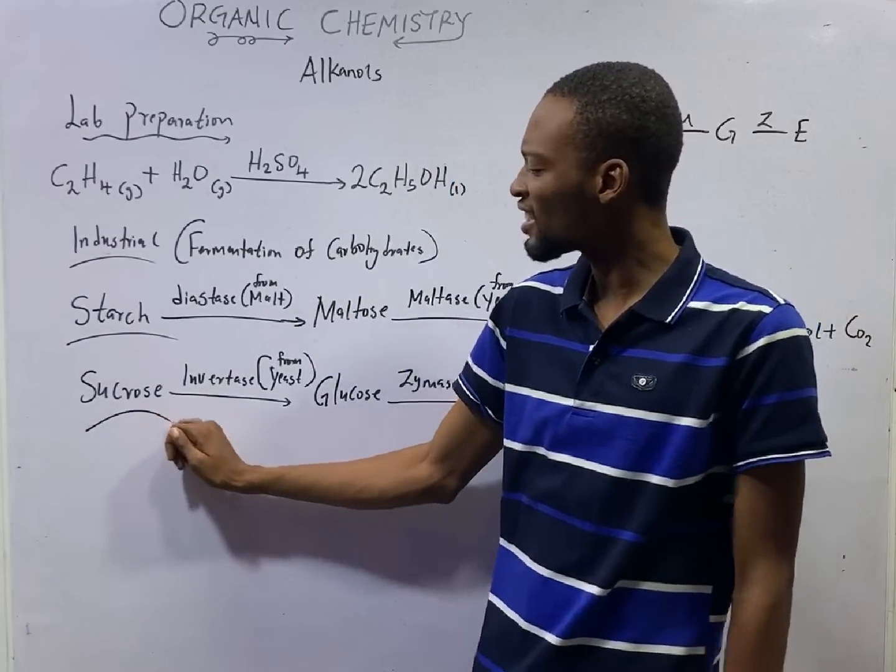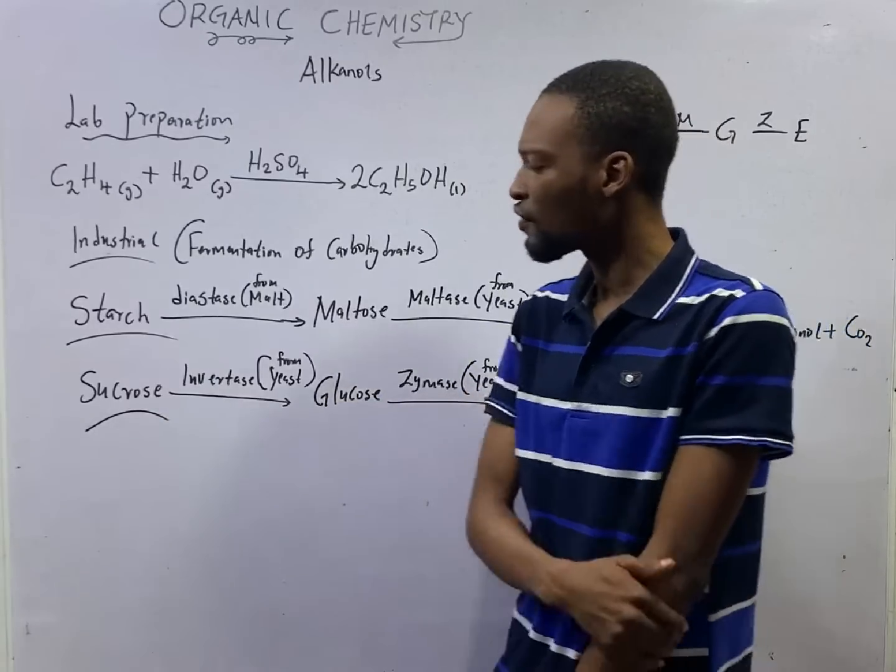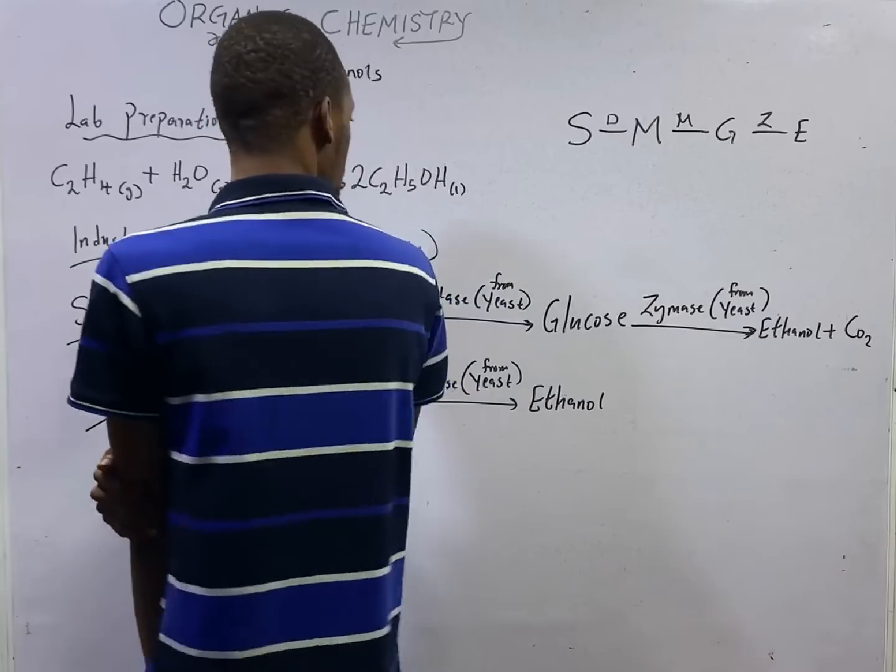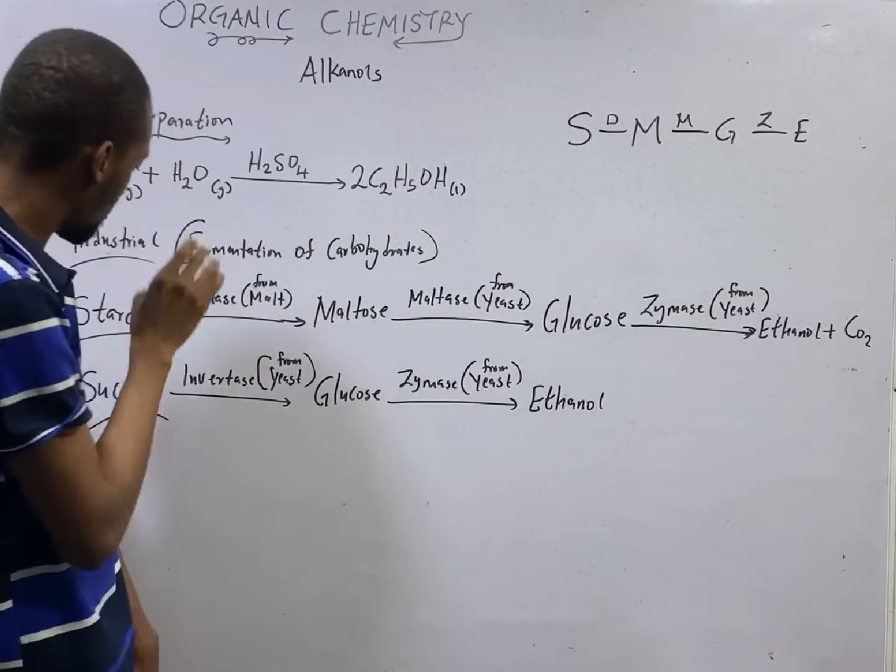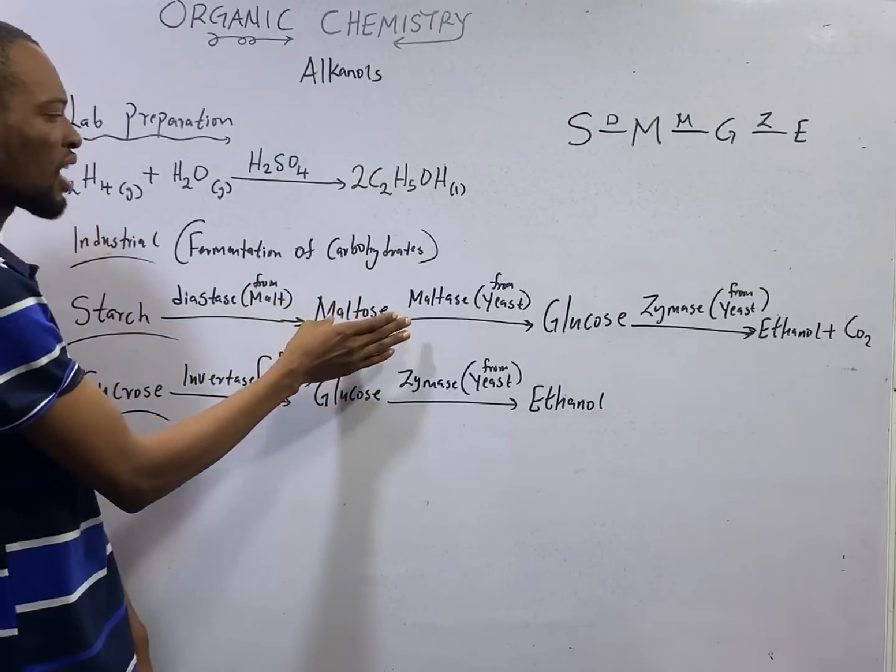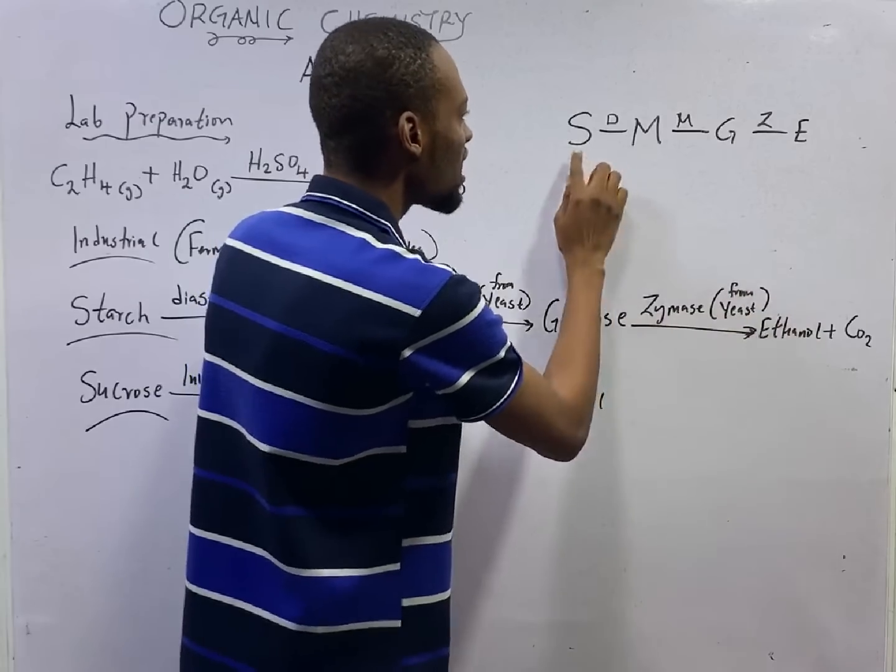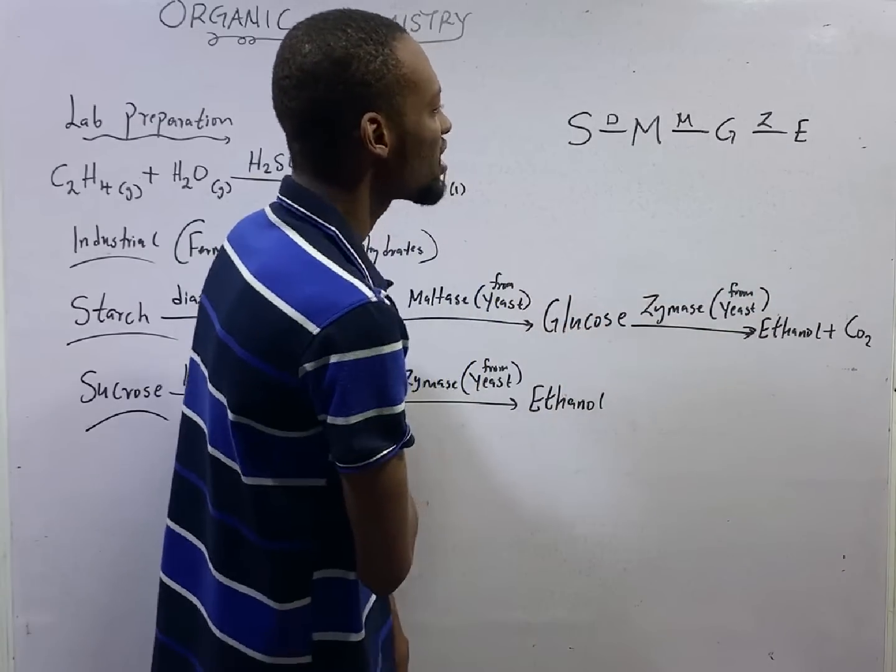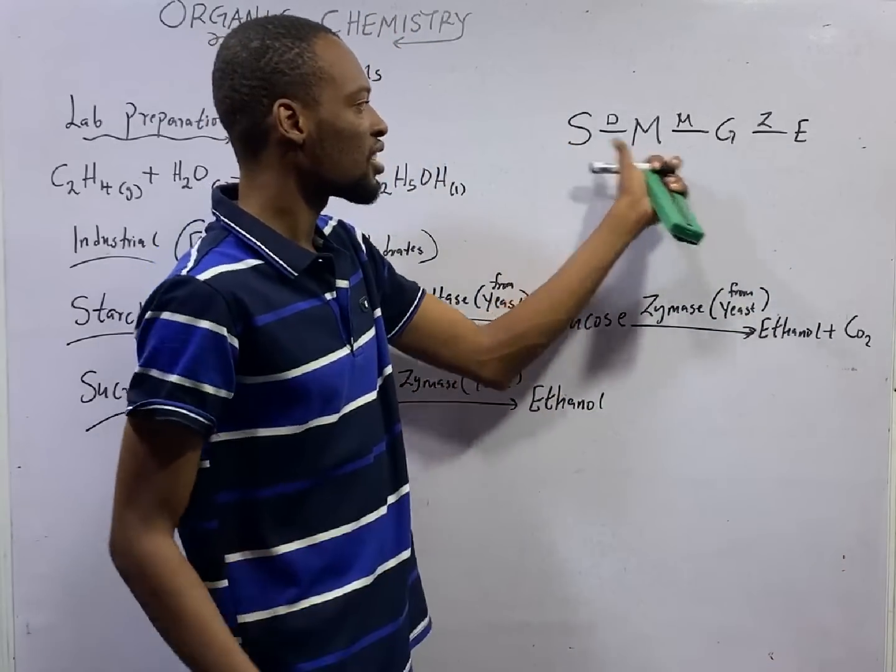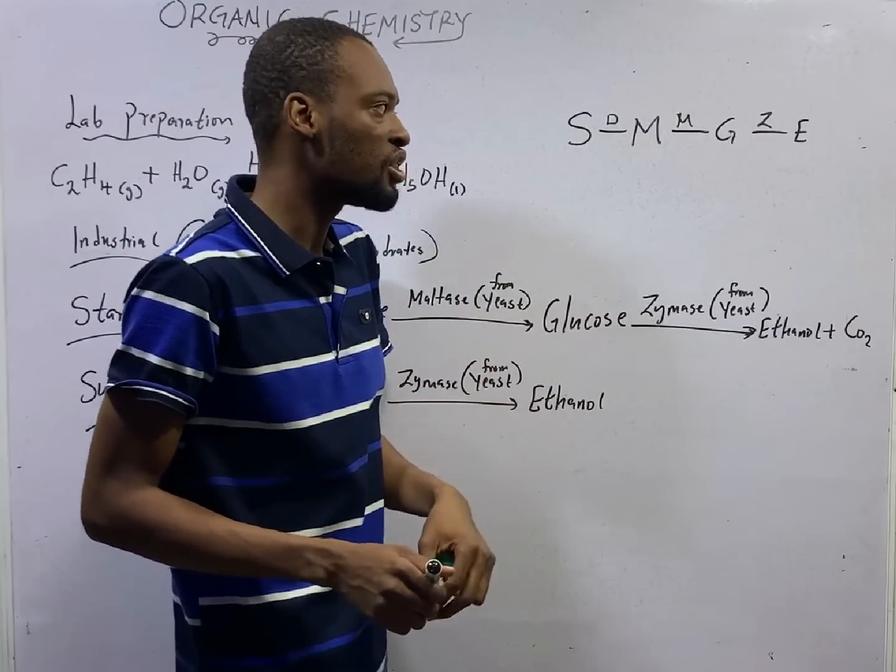Let's look at this once again. Starch is converted to maltose, and maltose to glucose. Glucose to ethanol. That is S-M-G-E. Starch, maltose, glucose, ethanol. Take note of that formula. S-M-G-E.